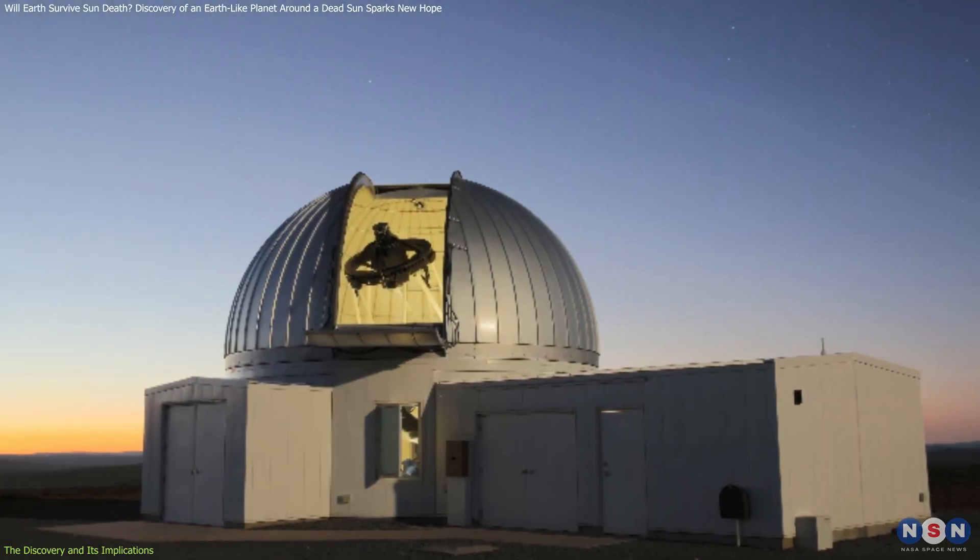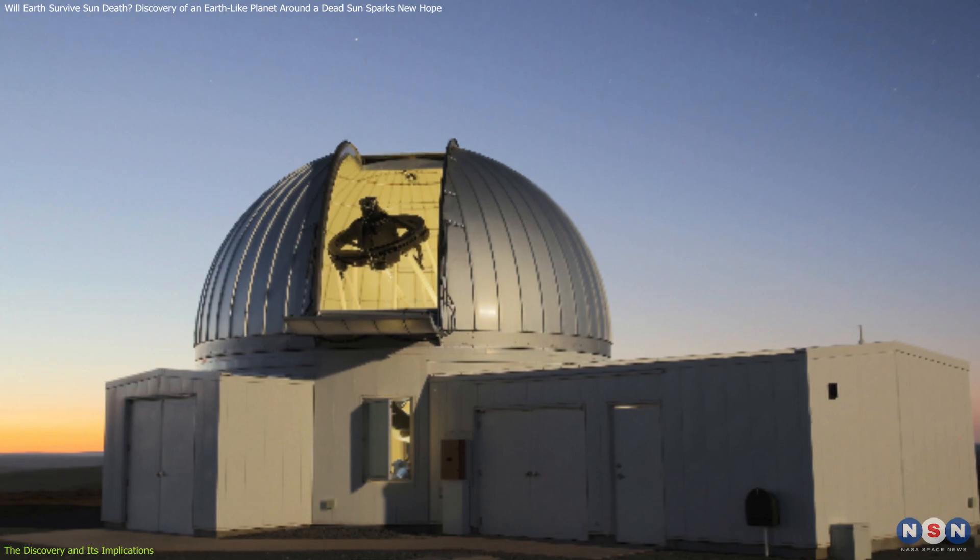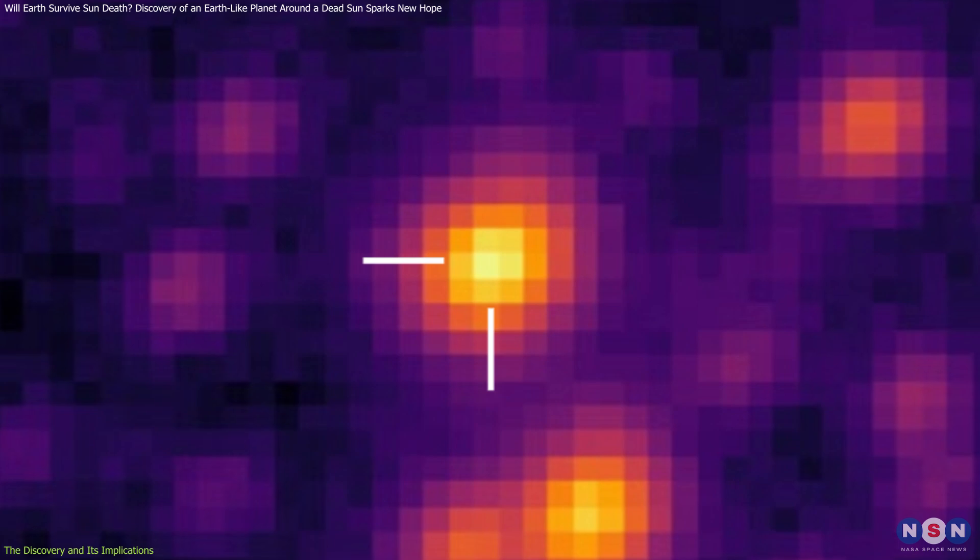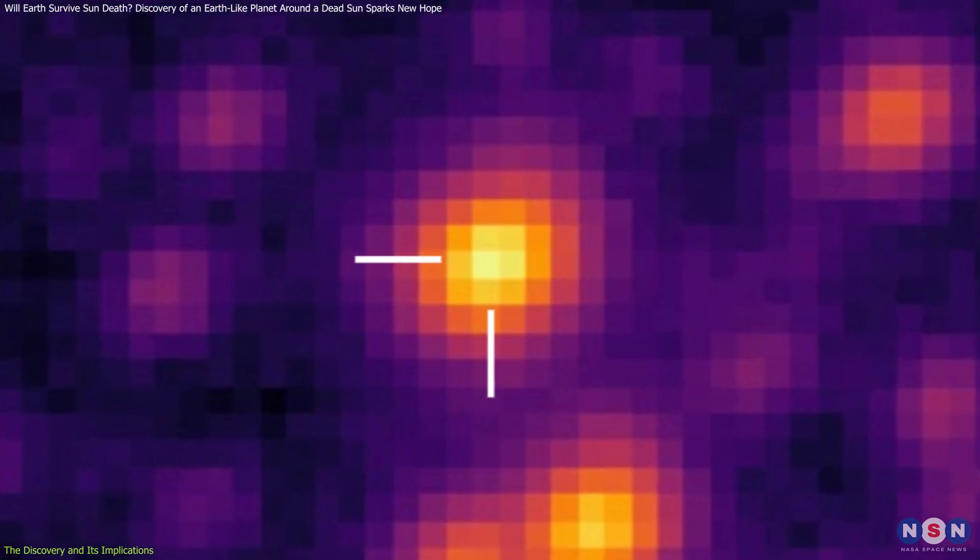Detected by the Korea Microlensing Telescope Network in 2020, this system caught astronomers' attention when it magnified a distant star's light by a factor of 1,000, acting as a gravitational lens.